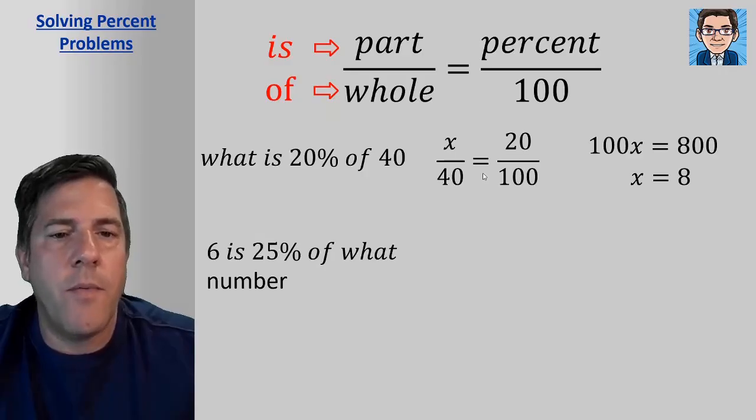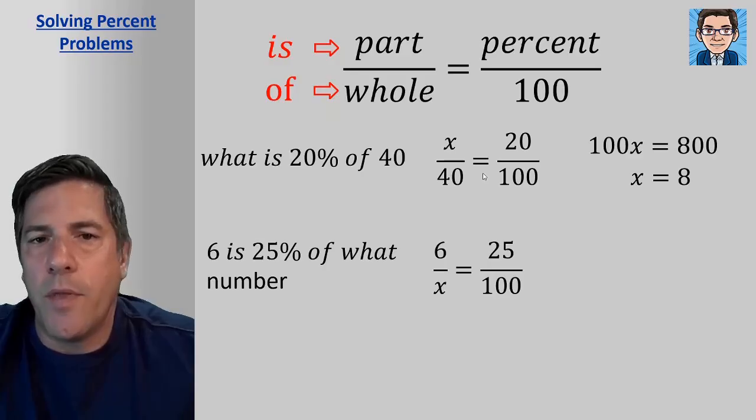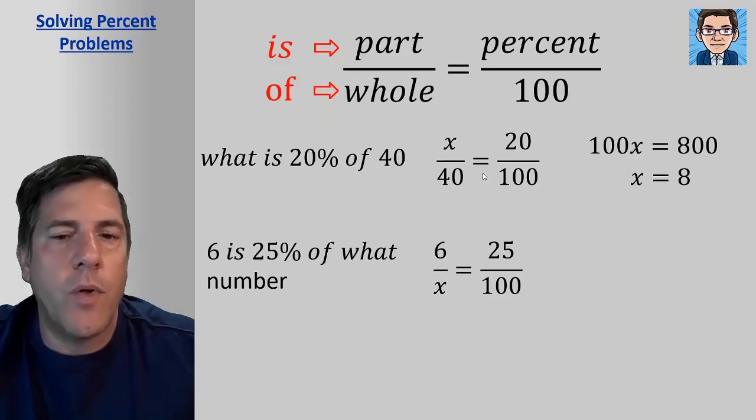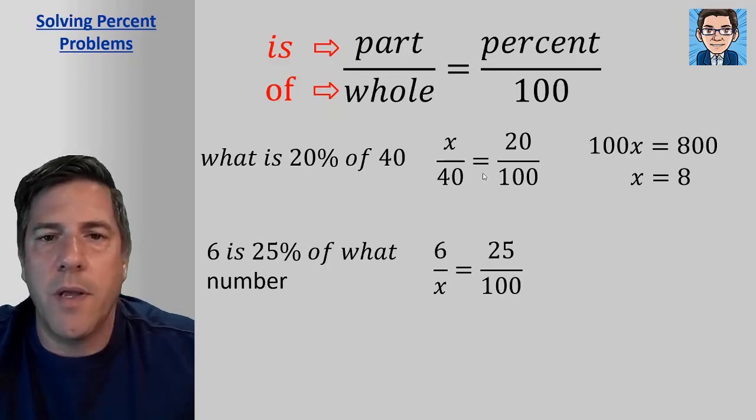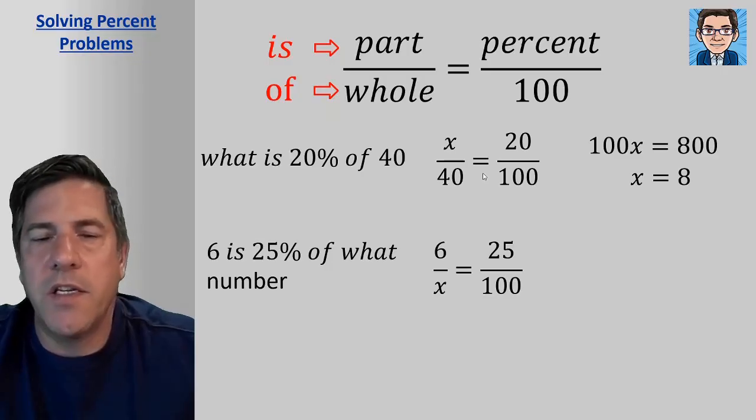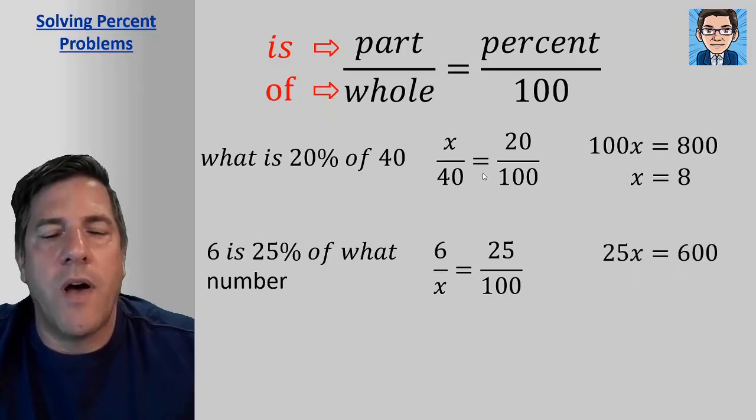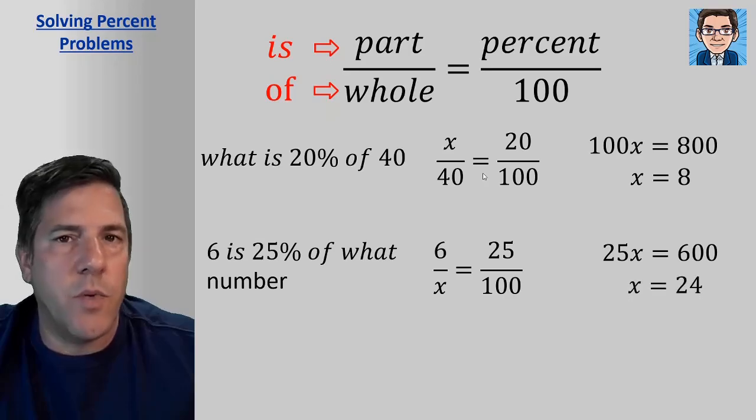All right, another version of the problem. Six is 25% of what number? So we would set up six. We know what the part is. Here we don't know what the whole is. So the variable here is going to be in the denominator for the whole because we don't know of what number. And we do know the percentage is 25. And again, we cross multiply 25x equals 600, divide by 25, and we get x equals 24.